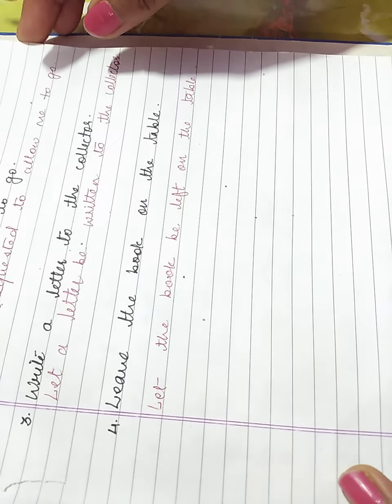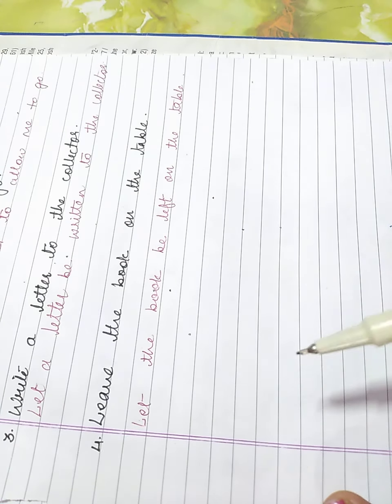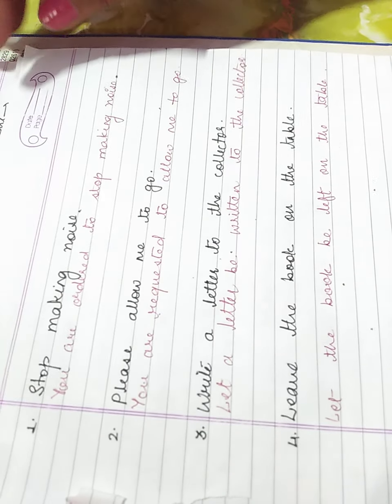Fourth sentence is: Leave the book on the table. It will become passive: Let the book be left on the table. These 4 sentences I have explained with solutions.